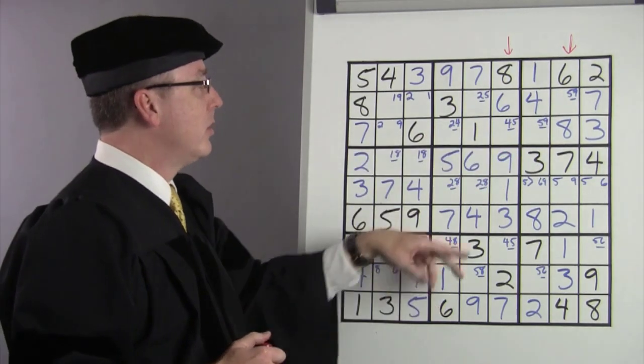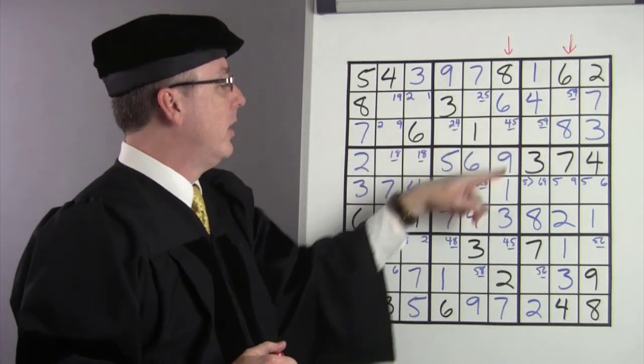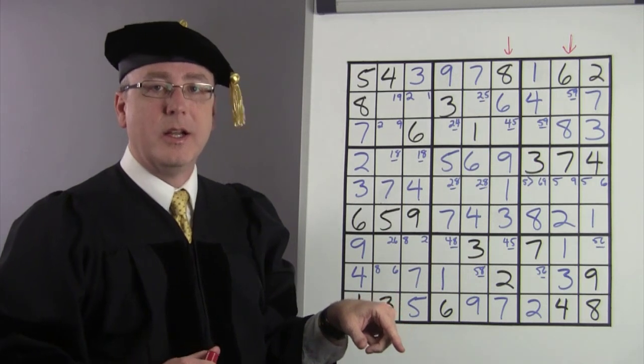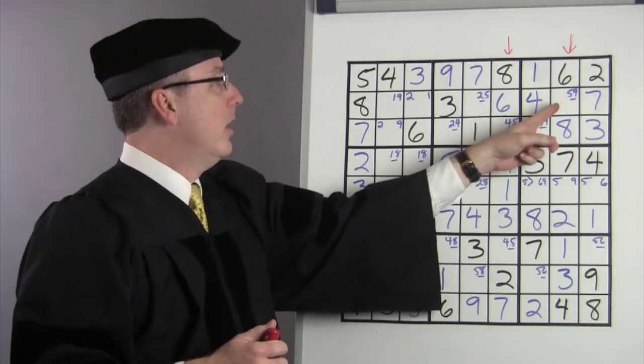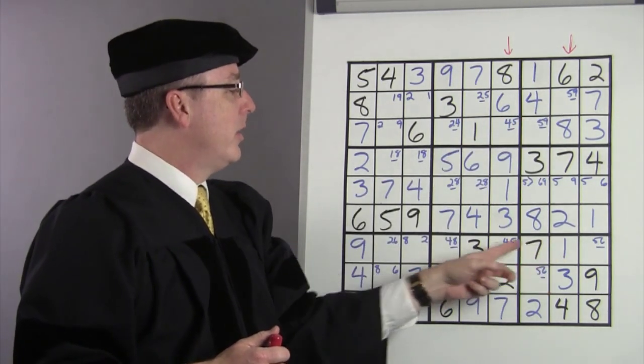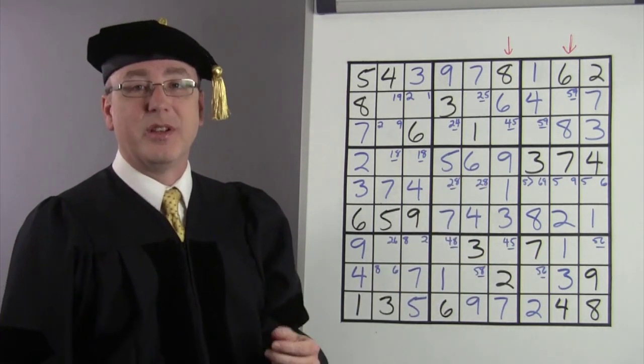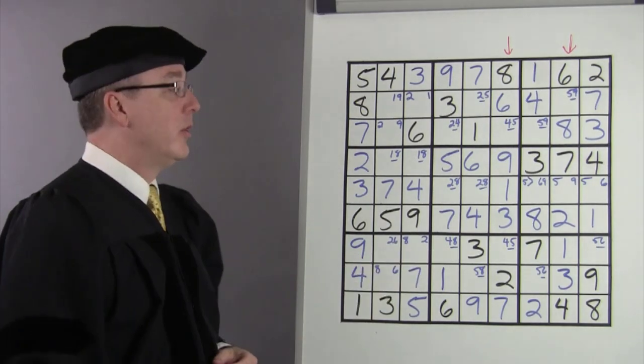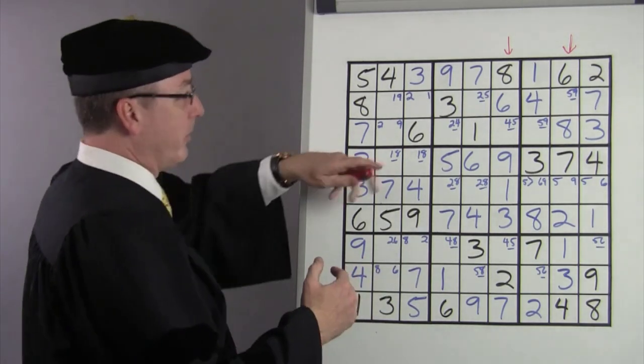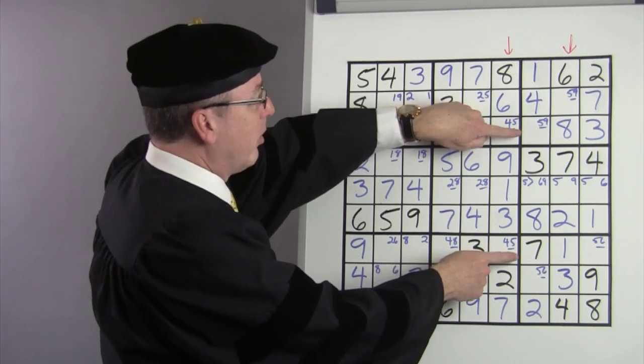So then what we do is we take the other endpoint here and here and find out where they intersect and see if we can do an elimination. We come down from the column there and across the row, and we find out that the space is already filled in. Oh well, found the pattern, but we couldn't do the elimination. Well, let's keep looking. Again, we're going to keep going across.